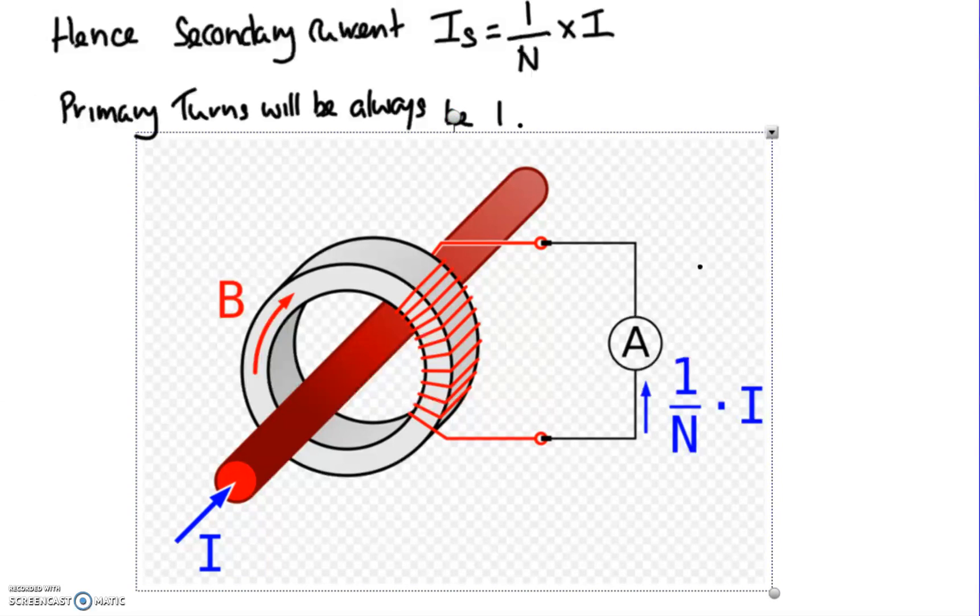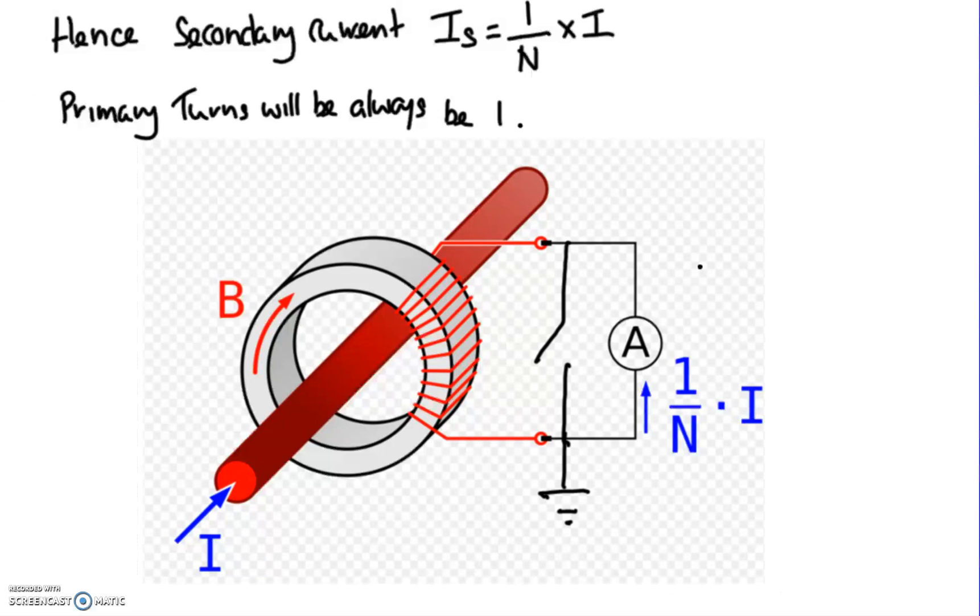Now there is a danger with current transformers in the fact that when they're in service, they're actually stepping the voltage quite high because we're lowering the current down. Obviously that means the voltage is going the opposite direction. So when we take the ammeter away, we have to be careful because we are left with a very high voltage.